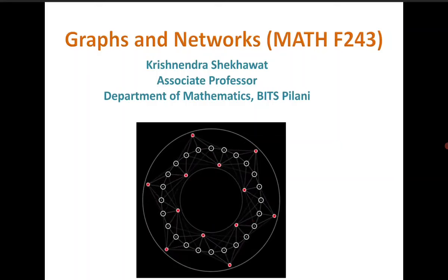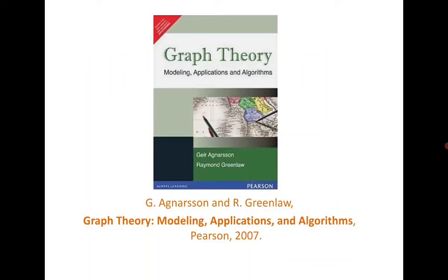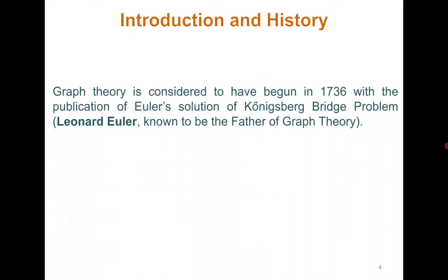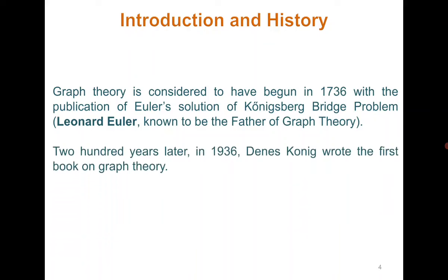Good morning everyone. Let's start the course: Graph and Networks. The book we are going to follow covers the flow of the course. Introduction to graph theory — graph theory is believed to have begun in 1736 with the Königsberg bridge problem, and Euler was the first one who gave the solution. After 200 years, in 1936, the first book on graph theory was published.